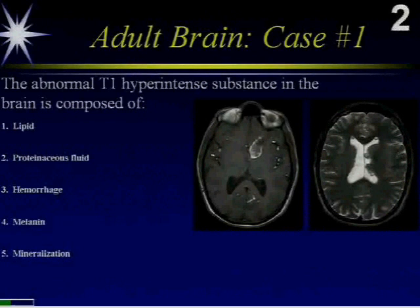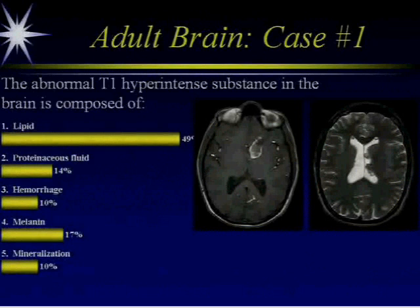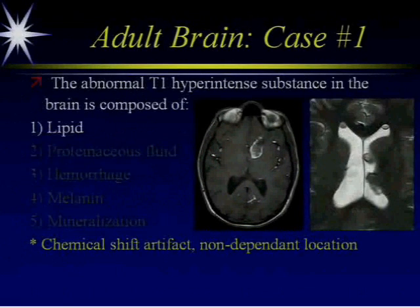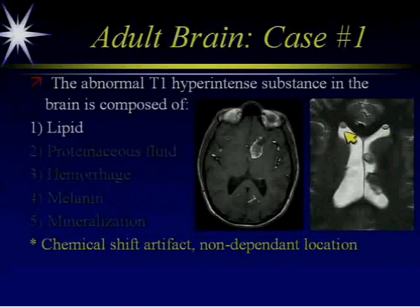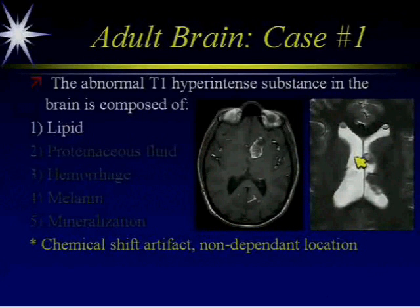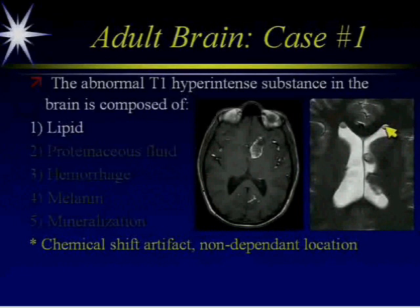The correct answer is lipid. The reason we know this is lipid is these drops that are floating ventrally in the CSF. In addition, we can see the chemical shift artifact at the boundary of lipid and water interface — there's a dark line inferiorly and a bright line superiorly. You get that at interfaces of water and lipid; that's known as chemical shift artifact.